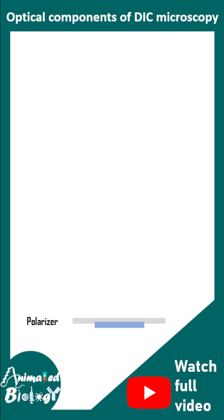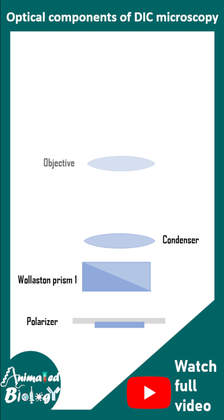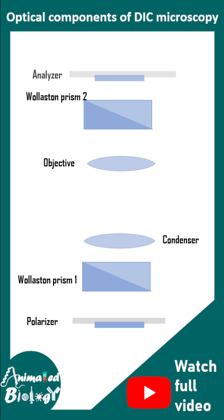The key optical elements in the DIC microscope are: a polarizer, Wollaston prism 1, condenser, objective — which are part of any standard microscope — then Wollaston prism 2 and an analyzer. The analyzer, polarizer, and these two Nomarski prisms are the key components of the DIC microscope. When plane polarized light passes through the Wollaston prism, it is split into two beams: the O-rays and the E-rays.